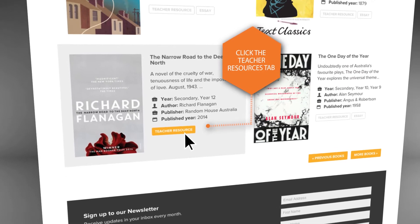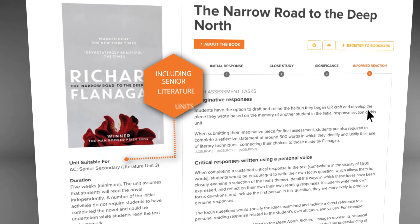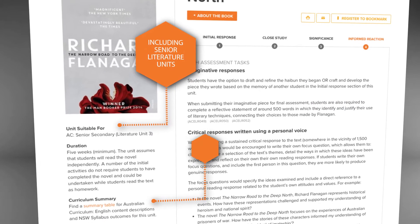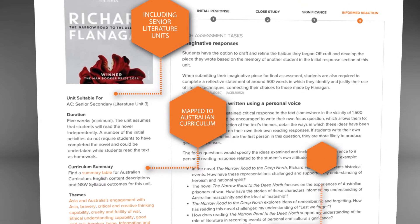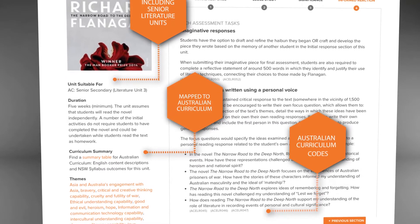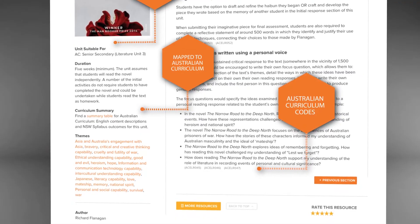The resources, created for years 7 to 12, including senior secondary literature units, are mapped to the Australian curriculum and have curriculum codes placed throughout. They're designed with multiple entry points, so you can pick and choose activities to suit you and your own classroom contexts.